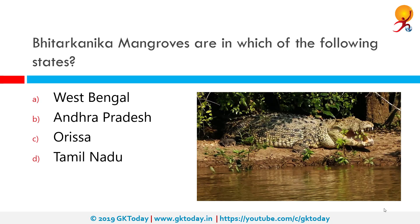Bhitarkanika mangroves are in which of the following states? The correct answer is Orissa. These mangroves form a wetland in Orissa covering an area of 650 km in the Brahmani and Baitarini river delta.